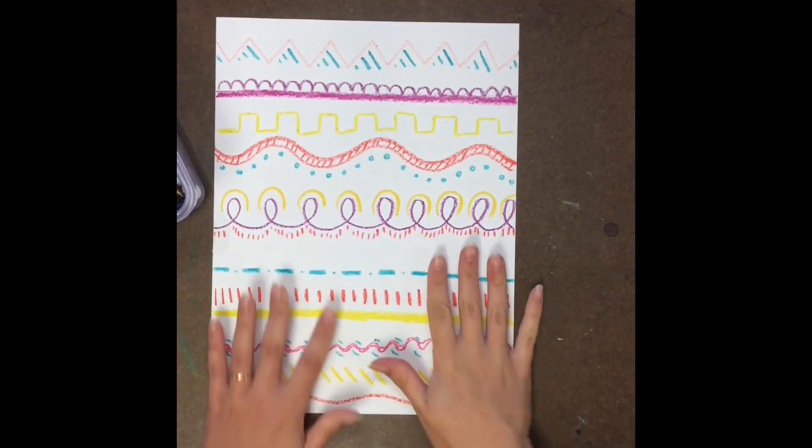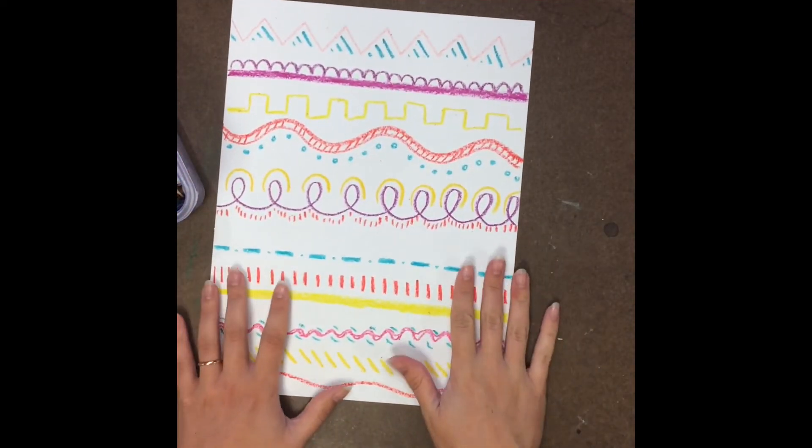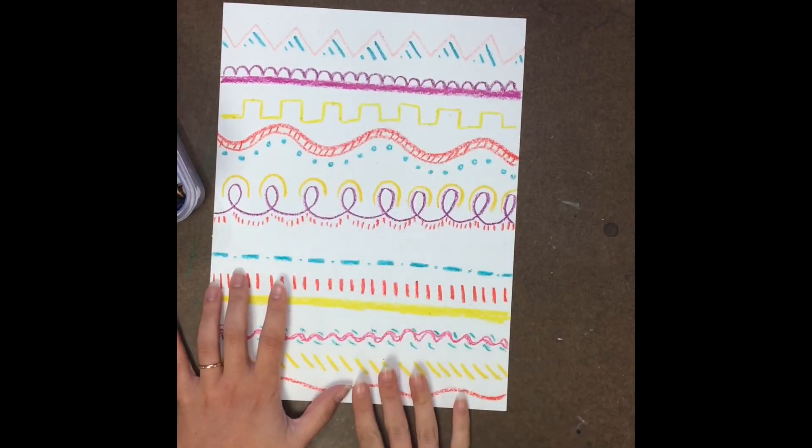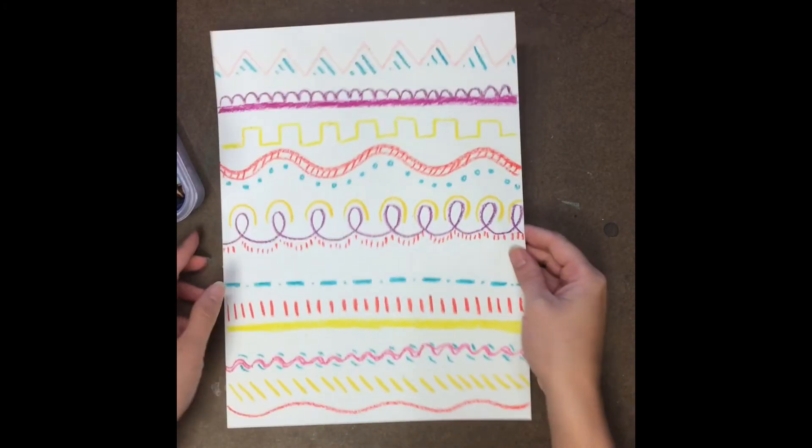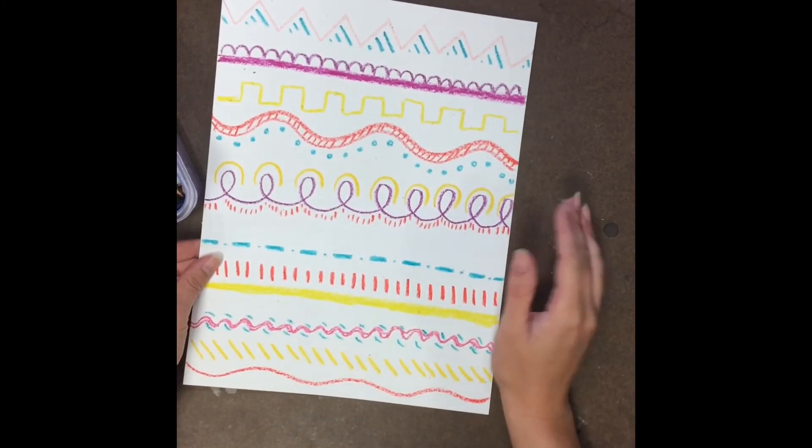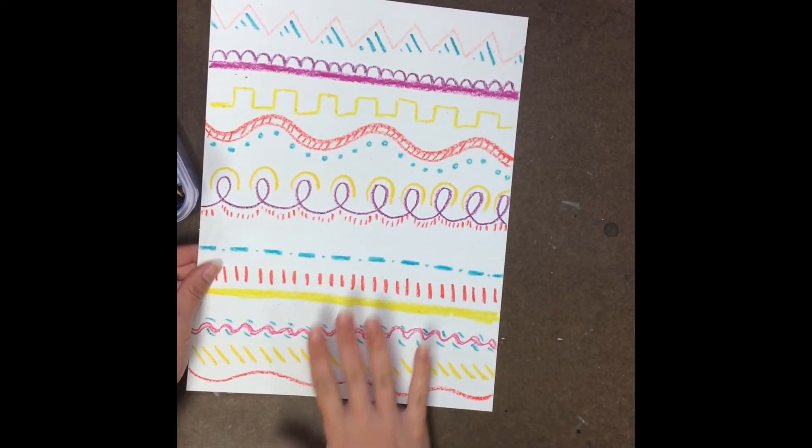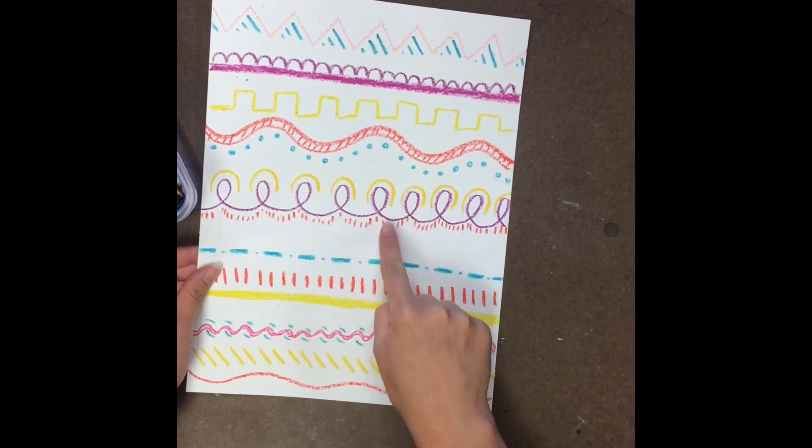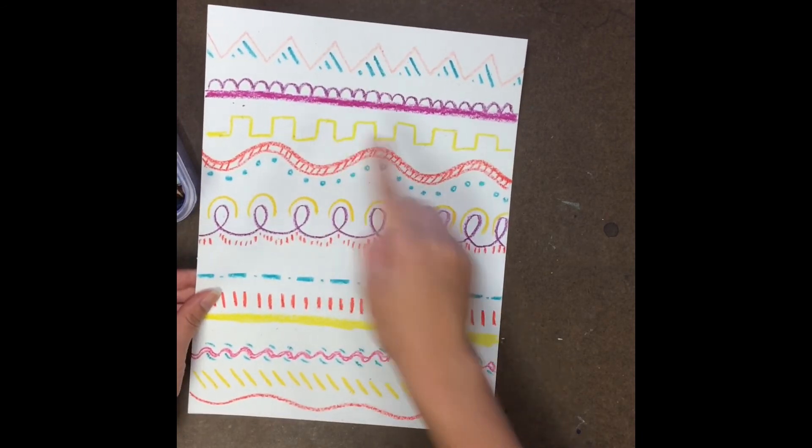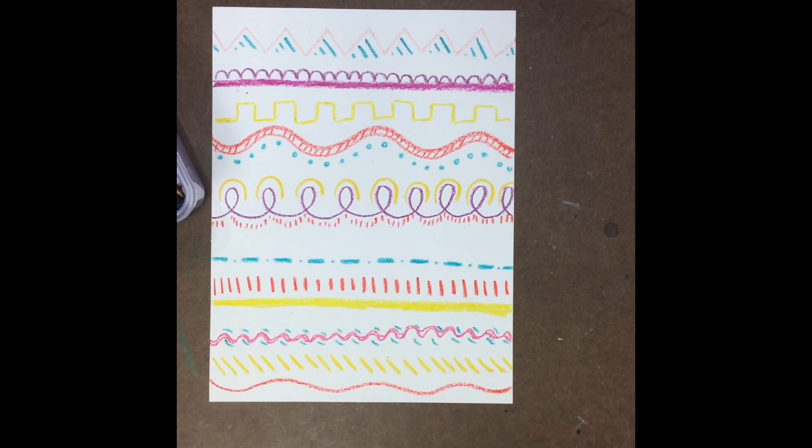When you've added as many different types of lines as you can think of and your entire paper is full, then you're probably starting to be complete. There were lots of times where I thought that I was almost done, but I kept adding more details. And the more I added, the better this art project looked.